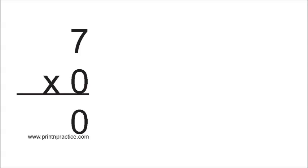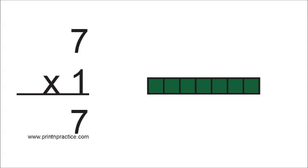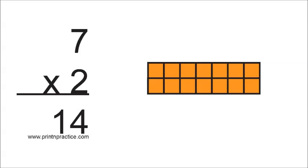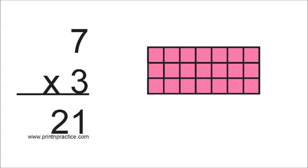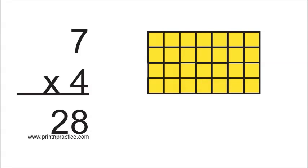7 times 0 is 0. 7 times 1 are 7. 7 times 2 are 14. 7 times 3 are 21. 7 times 4 are 28.